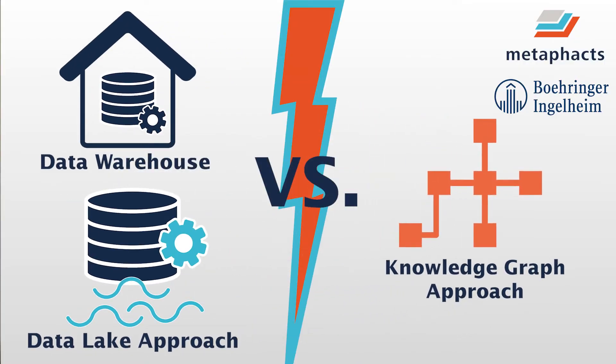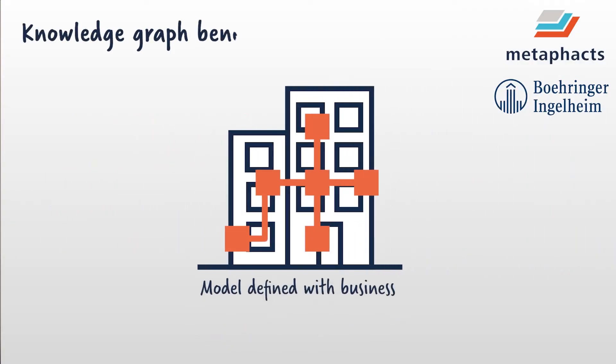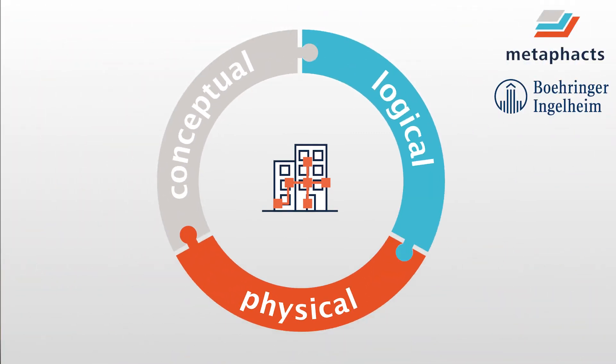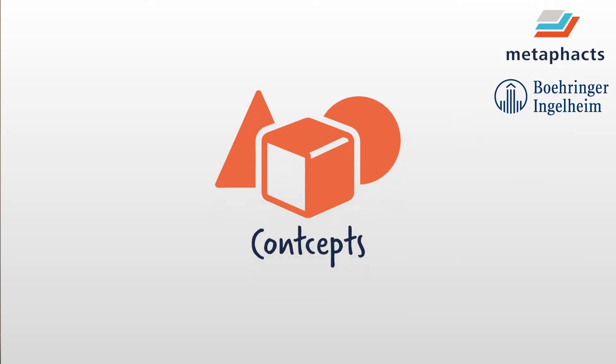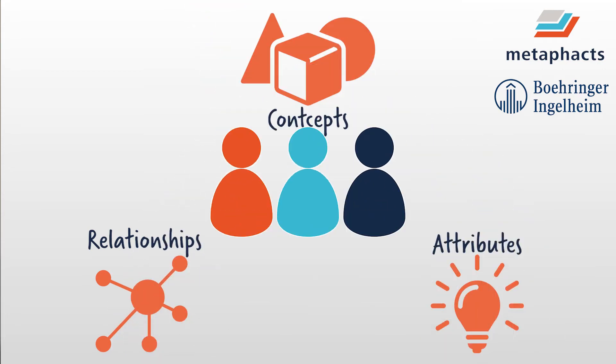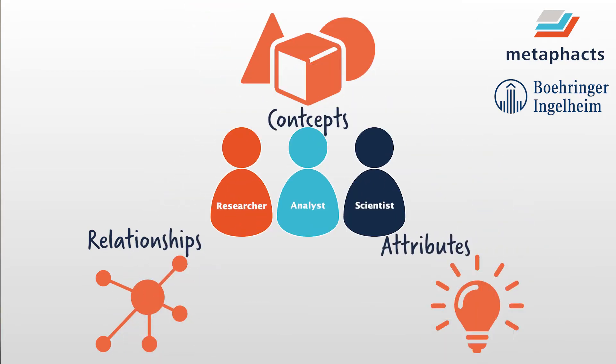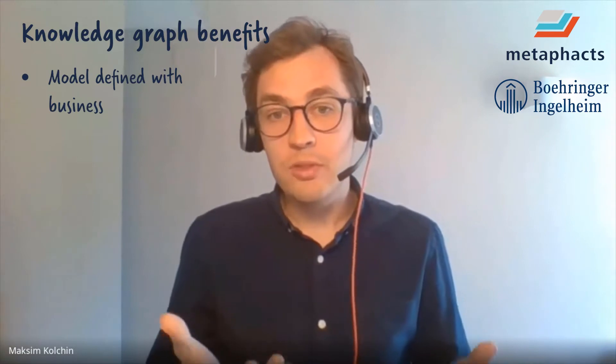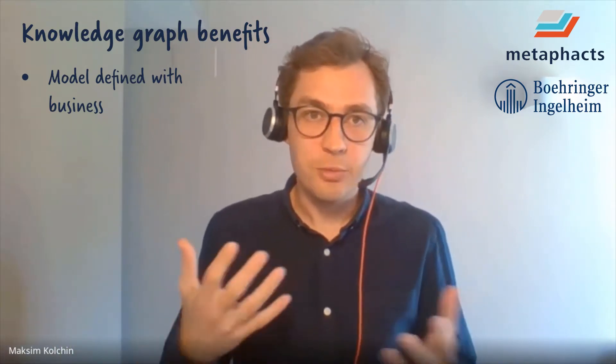Let's compare data warehouse and data lake approaches with the knowledge graph approach on a conceptual level. The first point is the data model: in the knowledge graph approach, the data model is defined together with business, with no separation between conceptual, logical, and physical layers. You define concepts, relationships, and attributes together with the business, and you use the same concepts when writing queries. This model is not somewhere outside of the data — it is together with the data, and the data actually references the data model directly.